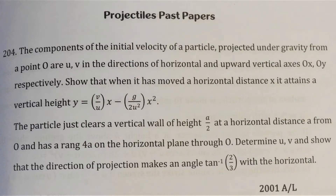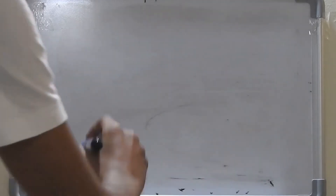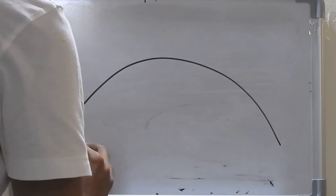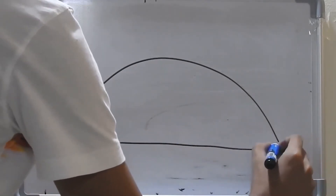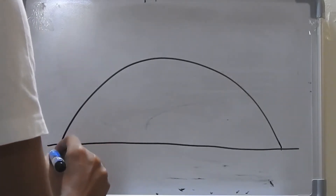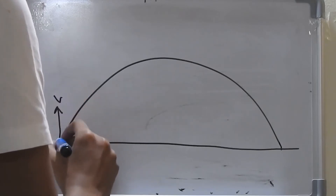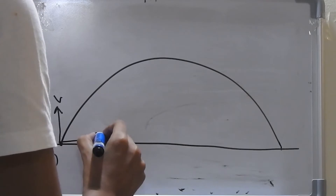Let's try and do the first part first. The components of the initial velocity of a particle projected under gravity from a point O are u, v in the directions of horizontal and upward vertical axis OX, OY respectively. On the horizontal plane, the particle starts from a point O with vertical velocity component v and horizontal velocity component u.